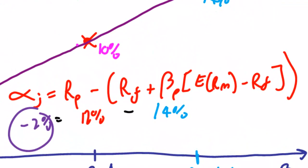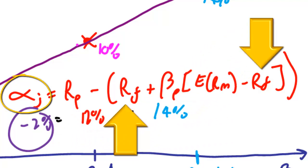Coming back to this equation, so long as we know the stock's actual return, its beta, the market return, and the risk-free rate, we can always work out an alpha.